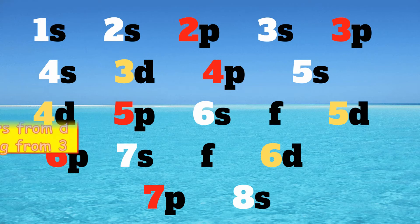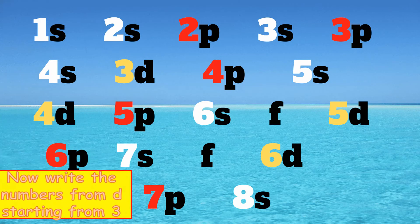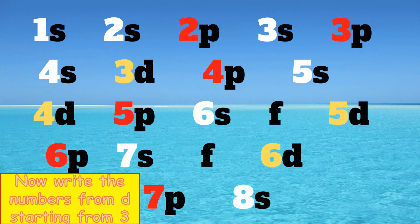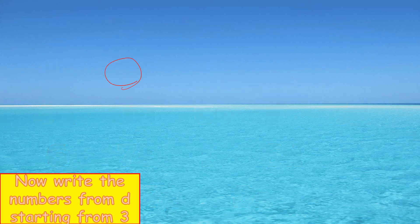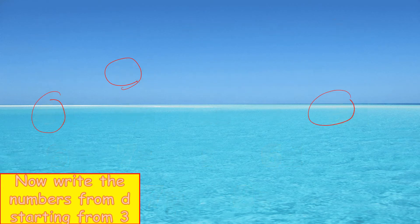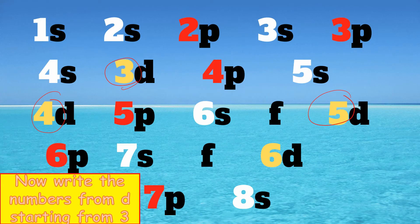Next is, write the numbers from D starting from 3. So you have 3d, 4d, 5d, and 6d.